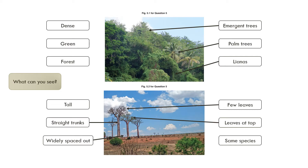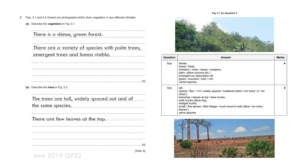Looking at the bottom picture, the trees are very tall, straight and unique. They are widely spaced — not dense — with leaves only at the top, and they appear to be a similar species with few leaves. When commenting on vegetation, consider whether it is dense or sparse, its color, and the variety of species. For trees, consider height, spacing, species variety, and where the leaves are.